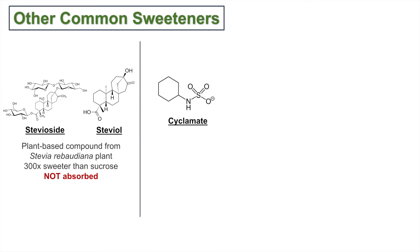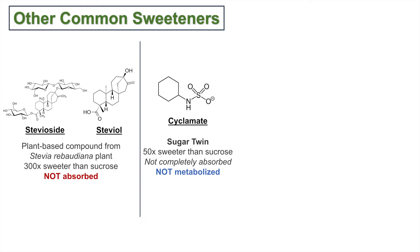Another common compound is cyclamate, also known as Sugar Twin. Sugar Twin is about 50 times sweeter than sucrose. It is not completely absorbed — only slightly absorbed — and it is not metabolized at all. Since it's not metabolized, it does not actually contribute any calories in and of itself.